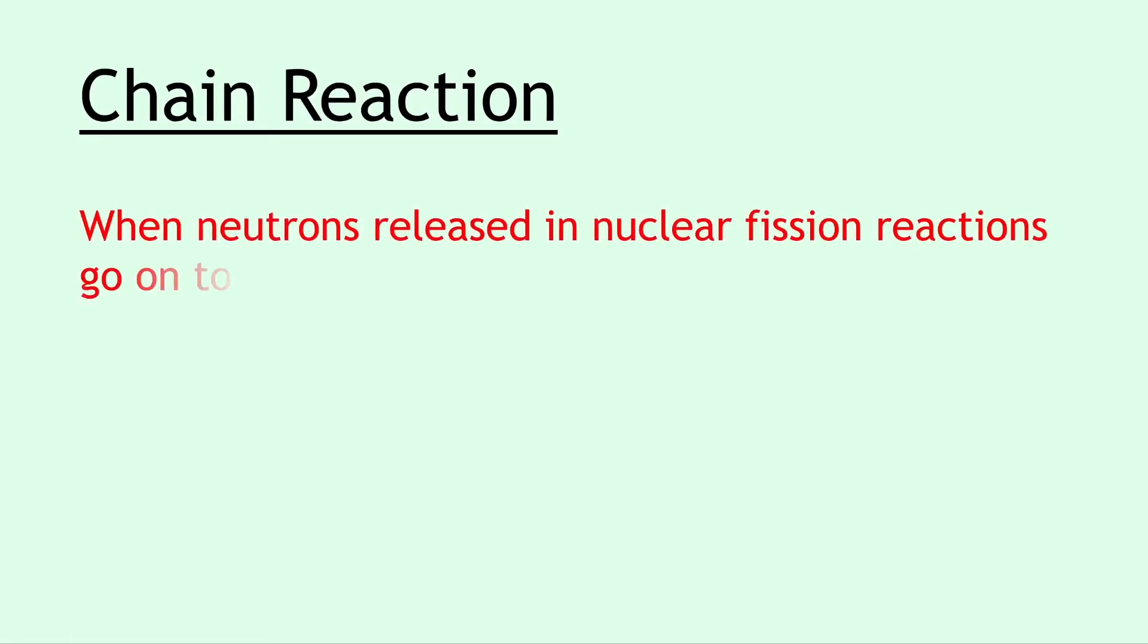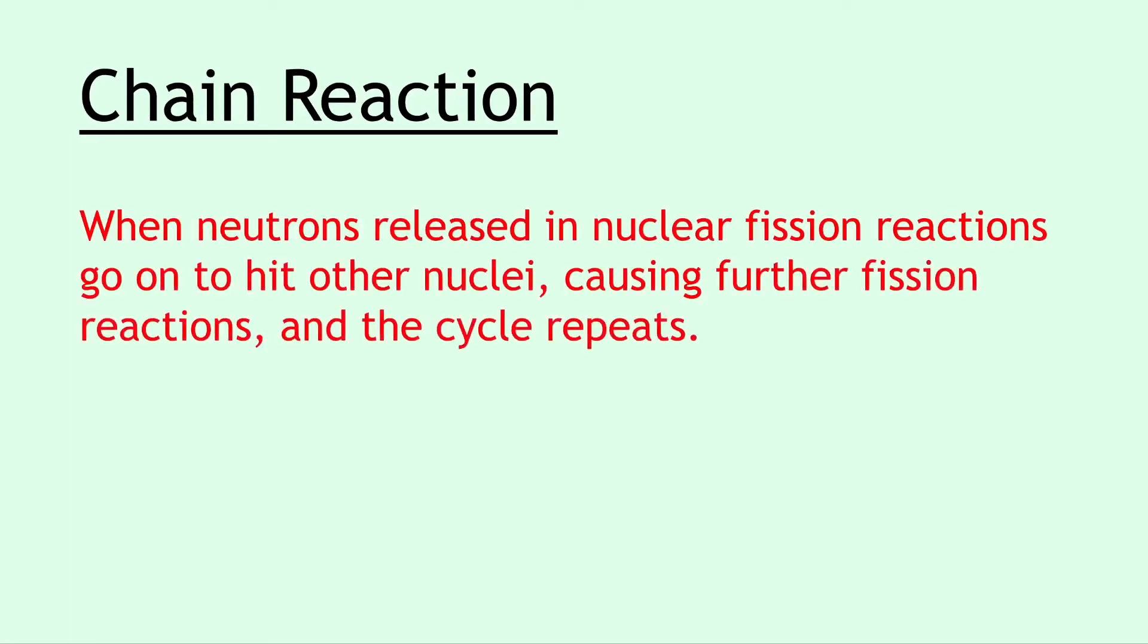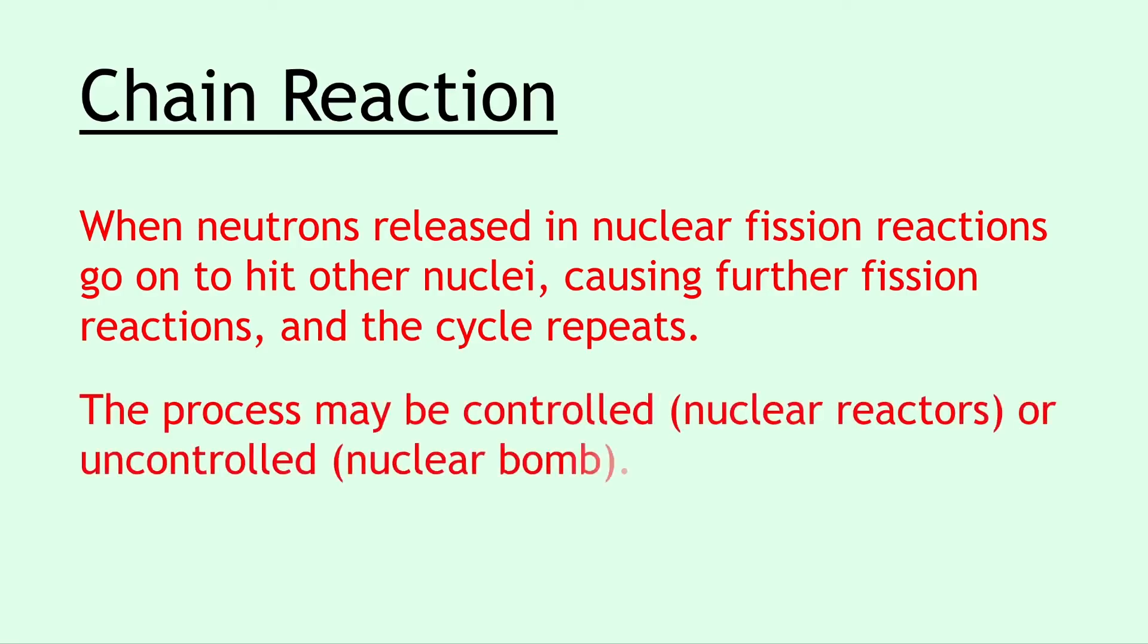Next we have a chain reaction, and this is something that can happen in nuclear fission reactors. This is when neutrons released in nuclear fission reactions go on to hit other nuclei causing further fission reactions and the cycle repeats. And it's really important to mention the neutrons in this definition. The process may be controlled such as in nuclear reactors or uncontrolled such as in a nuclear bomb or nuclear weapon.